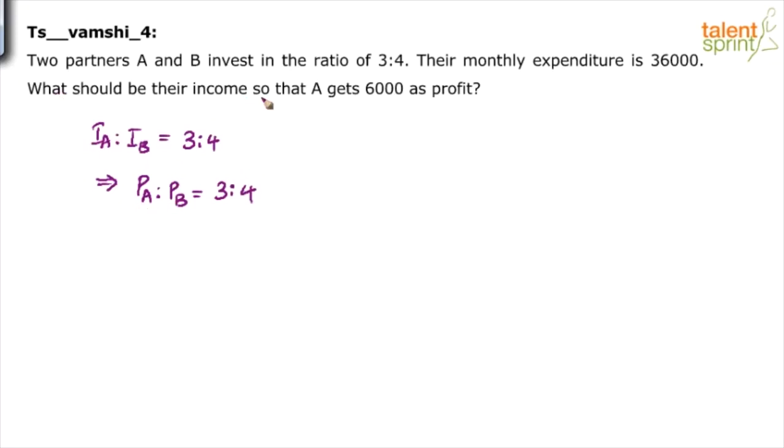Now the question says what should be their income so that A gets 6,000 as profit. A's profit is 6,000. Now if profit of A is 6,000, clearly profit of B would be 8,000. A's profit is 3 parts. If 3 parts is 6,000, we know that each part will be 2,000. B's profit is 4 parts. If each part is 2,000, 4 parts will be 8,000.